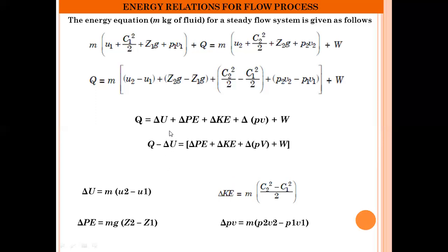This equation can also be written as Q − ΔU = ΔPE + ΔKE + ΔPV + W, which is the general steady flow energy equation for M kg of fluid for an open system. With the help of this SFEE, we can write the steady flow energy equation for a number of engineering devices such as water pumps, water turbines, steam turbines, gas turbines, compressors, boilers, condensers, and nozzles. This is how we derive the SFEE for an open system — I hope you have understood the concept of the steady flow energy equation. Thank you for watching this video.